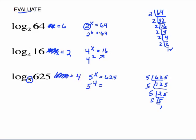We've converted all of those to exponential form because most students think better in that form since they're more used to it. After you do enough of these, hopefully you can think in your head: 2 to the what gives me 64? Well, 2 to the 6. 4 to the what gives me 16? 4 squared. Let's see if you can think that way on the next couple.